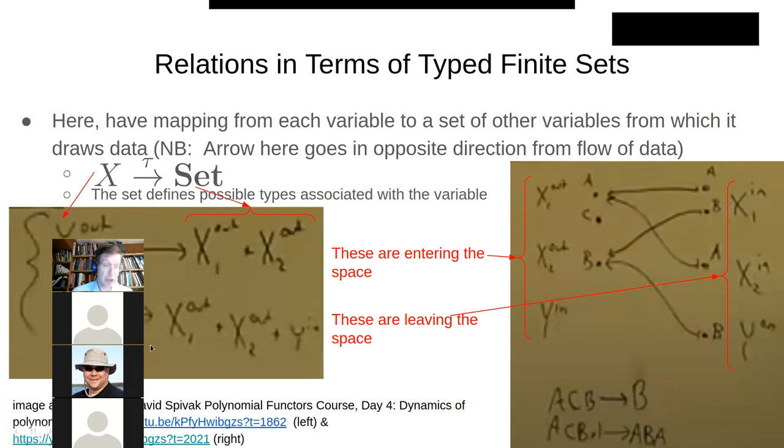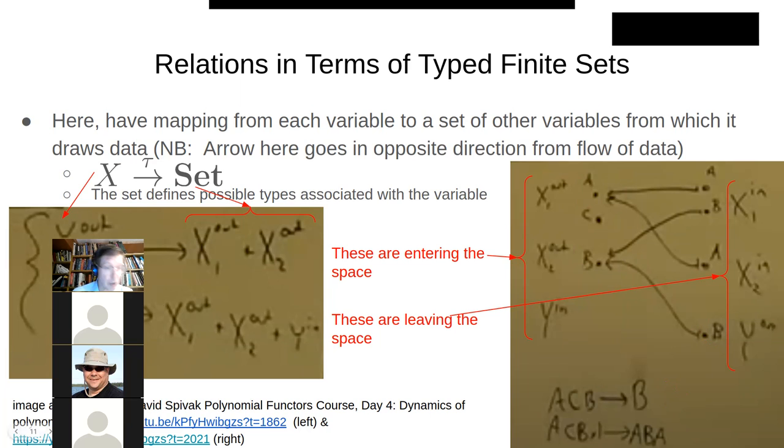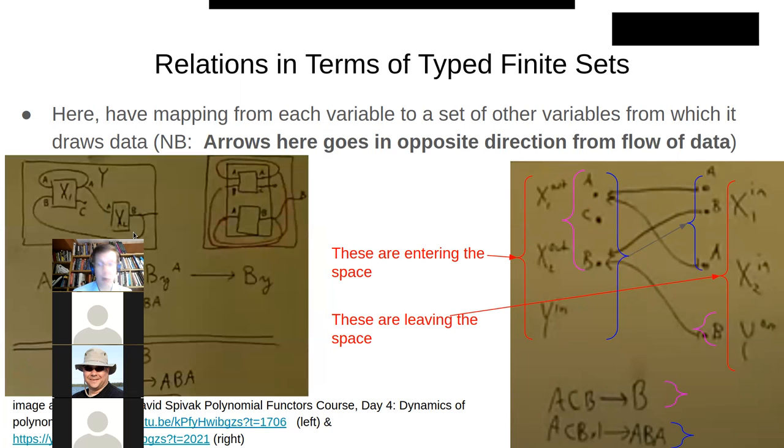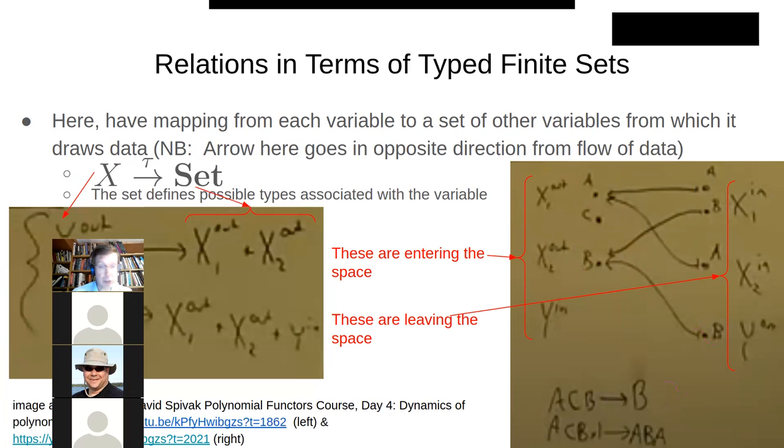And so there's some rules here about what has to feed what in these wiring diagrams. Outputs can be fed by outputs of internal things. Inputs on internal things can come from outputs of internal things or inputs to the whole thing.